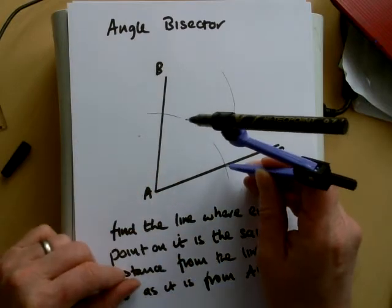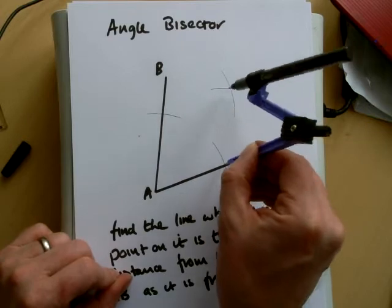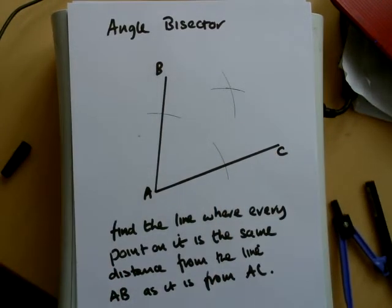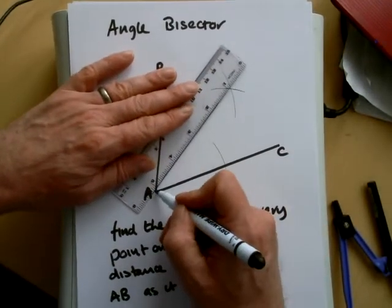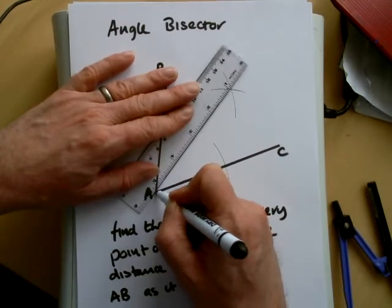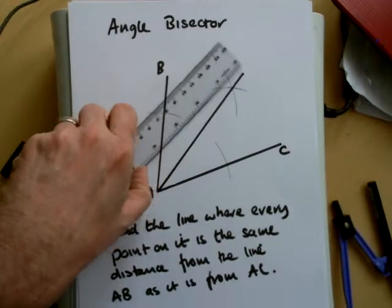Swap it over, make sure your compass doesn't move at all, and draw another arc there. Now your angle bisector will therefore be the line that connects where the two lines join. And we now have the angle bisector.